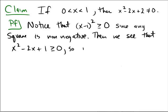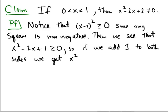So, if we add 1 to both sides, we get x² - 2x + 2 ≥ 1.